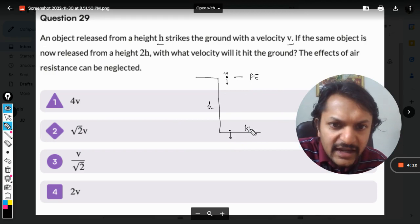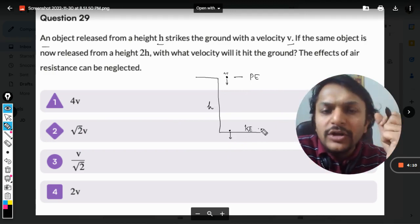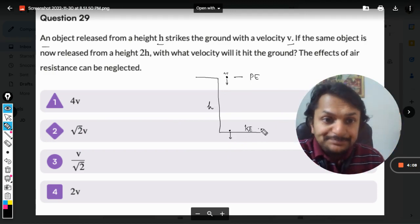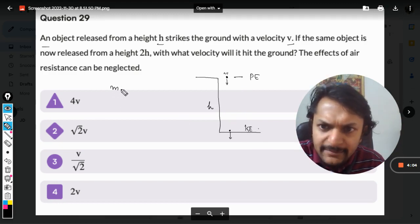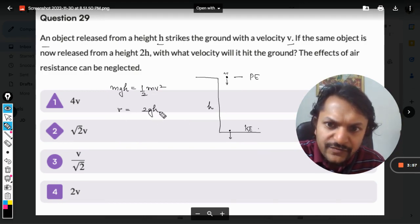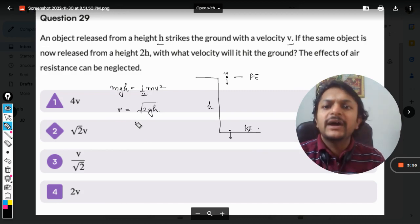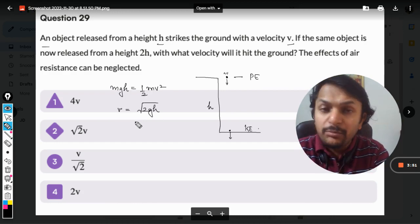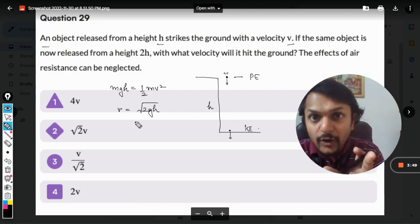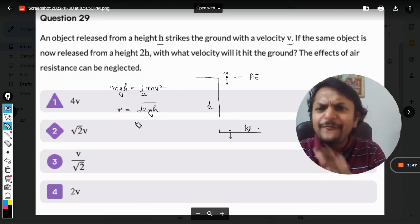When the ball reaches the bottom, mgh equals ½mv². So the final velocity reached will be given by √(2gh). This is the velocity with which the ball will hit the ground. This same formulation can also be derived from the principles of kinematics.